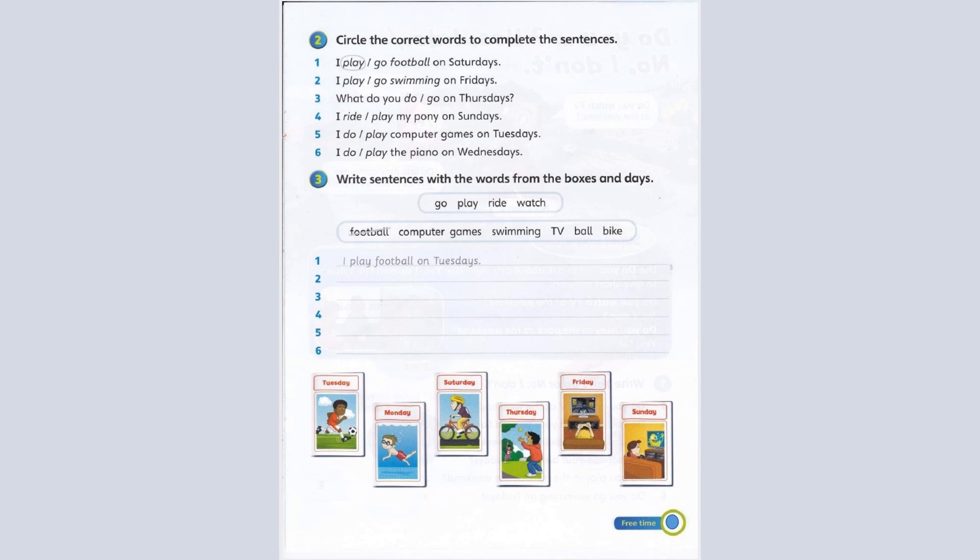For example, number one: I play football on Saturdays. We say I play — we never say I go football on Saturdays. So play is circled. Now circle the correct words in each of the sentences from number two to number six.